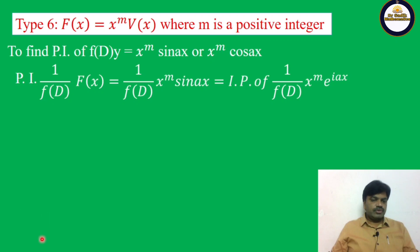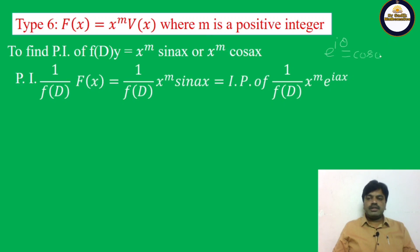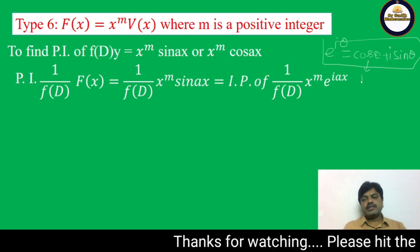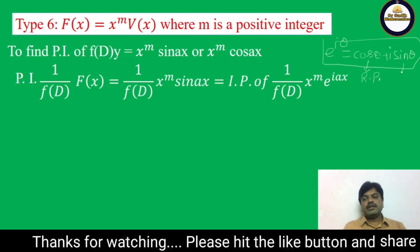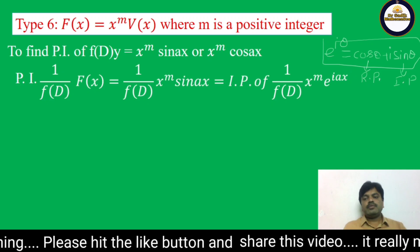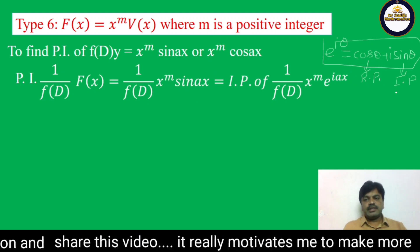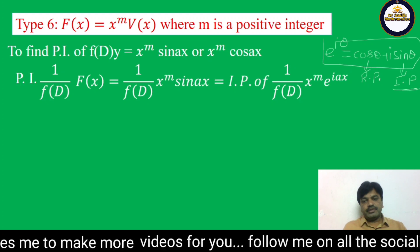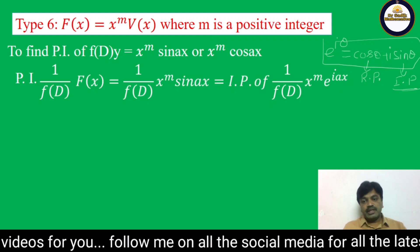This is because we know e^(iθ) = cosθ + i·sinθ. So cos(θ) is the real part and sin(θ) is the imaginary part. Since we have sin(ax), sin(ax) is the imaginary part — that is why we write the imaginary part of (1/f(D)) · x^m · e^(iax).